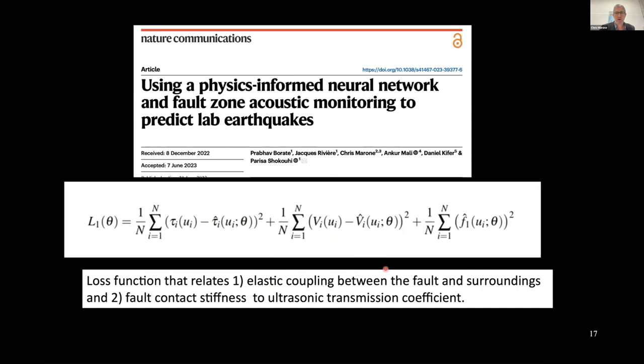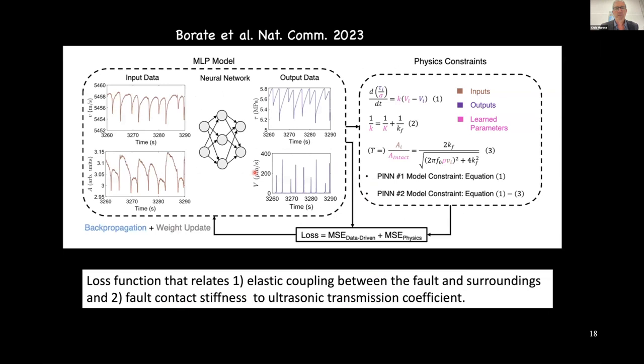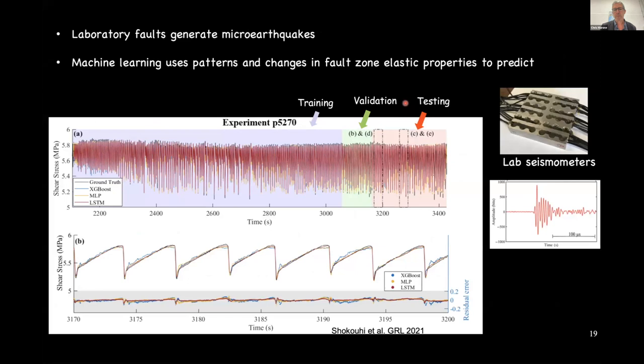Two things are being built into the loss function of this deep learning model: one is the elastic coupling between the fault and its surroundings, and the other is the fault contact stiffness. Both come directly from the active source information. You can see the way the multilayer perceptron model works with the two physics constraints — we're taking the transmitted amplitude, getting the stiffness from it, and then solving for the velocity to tell us something about what happens in the experiments.